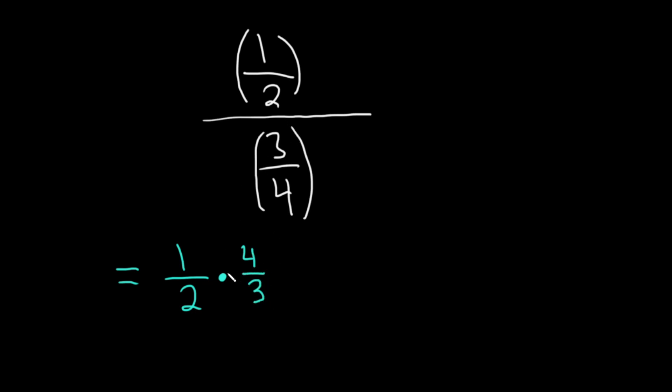So division is the same thing as multiplication by the reciprocal. And we can simplify stuff here or we can do it later. Let's just do it here. 2 goes into 2 once. It goes into 4 twice. We get 1 times 2, which is 2 over 3. So 2 thirds.